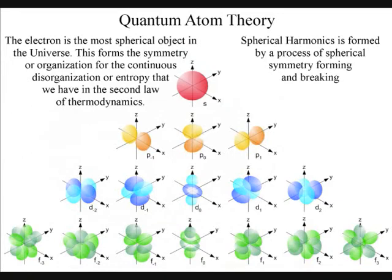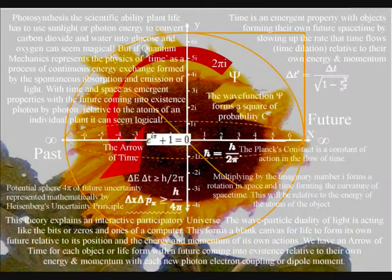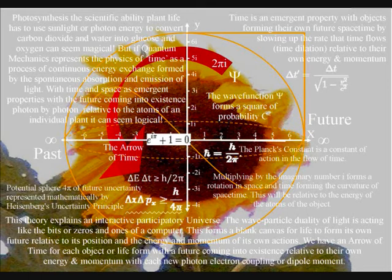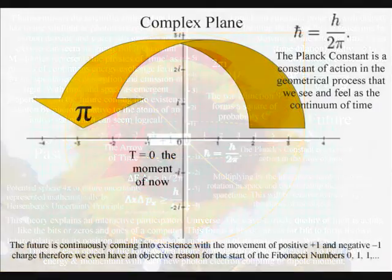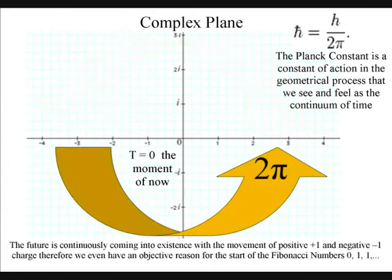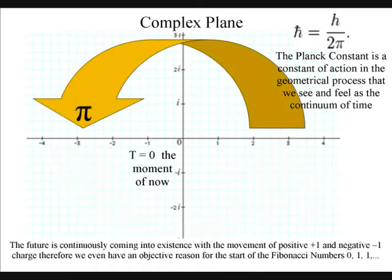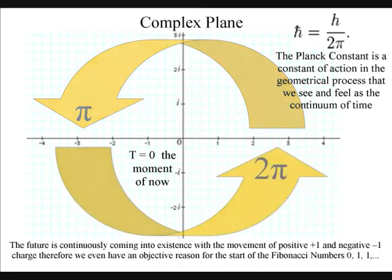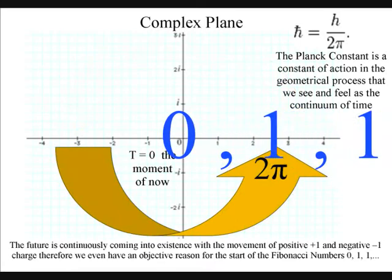This can also explain why these spirals are never perfect. It is because they are formed out of broken spherical symmetry relative to the atoms of the periodic table. The positive one and the negative one represents the positive and negative of electromagnetic waves. Therefore, we even have an objective reason for the start of the Fibonacci numbers, 0, 1, 1.